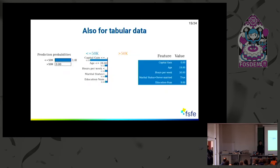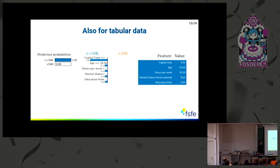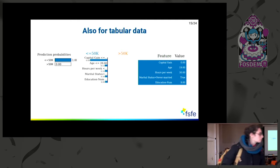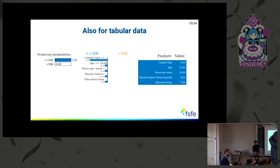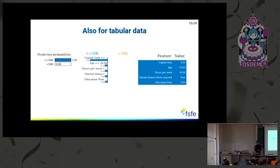This also works for tabular data. Here the example is 2D tabular data for predicting whether a salary is less than or more than 50K. You can see all the features that were used to do the classification, allowing you to ensure that your model is well-trained and is transparent, so that you can give an explanation for your predictions.